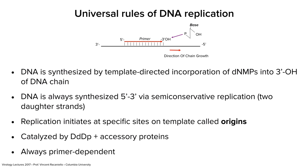DNA replication has universal rules, just like RNA synthesis. All DNA replication that we know of is primer-dependent. At the top is our template strand in black from 3' to 5'. There is a red primer hybridizing to it. The enzyme DNA-dependent DNA polymerase adds bases to the 3' end of the primer and synthesizes in a 5' to 3' direction. DNA is made by template-directed incorporation, and DNA is always made in a 5' to 3' direction.